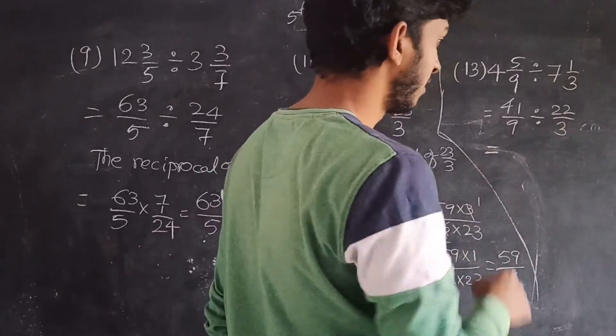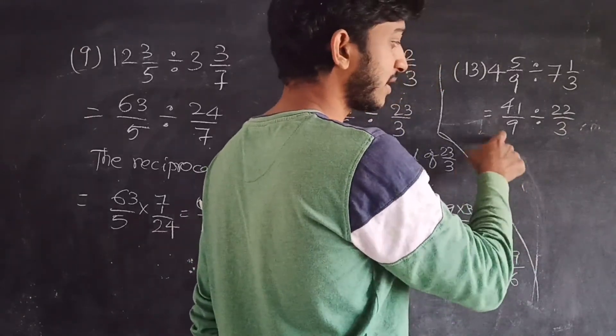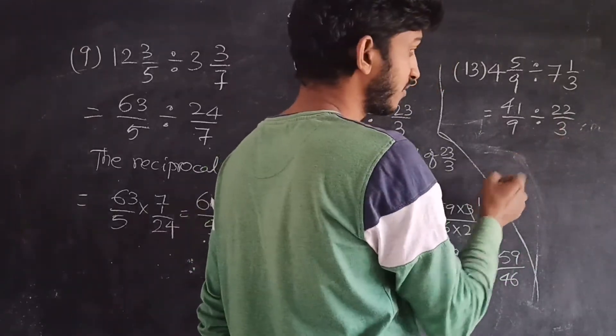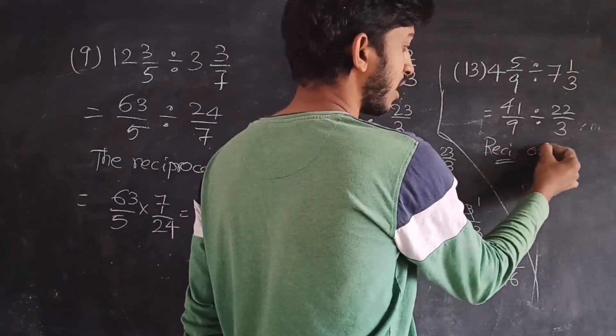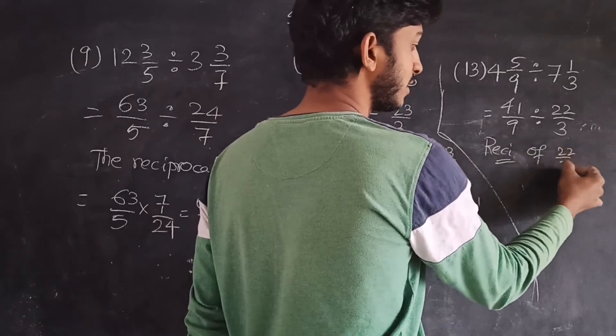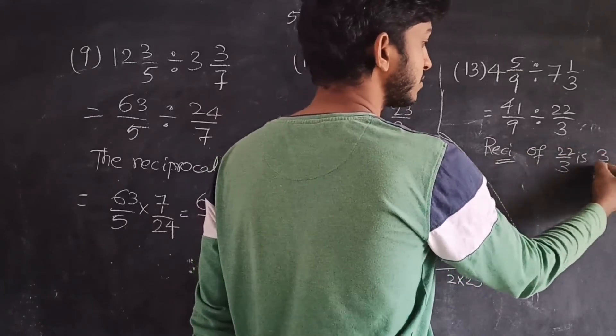Okay, see here: 41 by 9 divided by 22 by 3. So the reciprocal of 22 by 3 is 3 by 22.